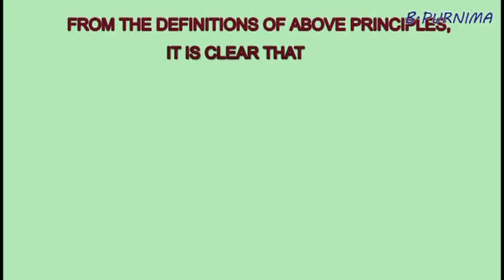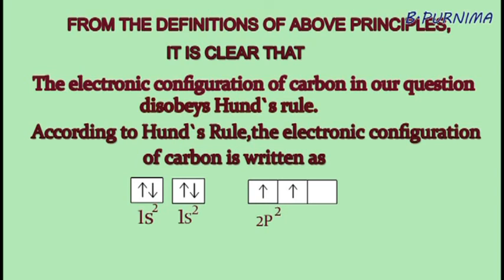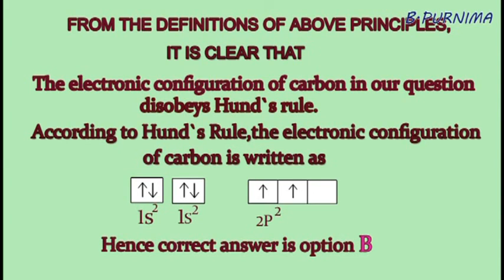From the definitions of the above principles, it is clear that the electronic configuration of carbon in our question disobeys Hund's rule. According to Hund's rule, the electronic configuration of carbon is written as shown. Hence, the correct answer is option B.